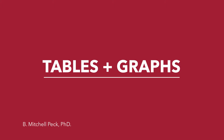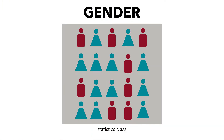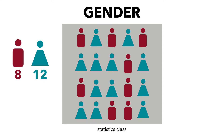In the previous tutorial, we learned how to calculate the frequency for the variable gender. This was the data set that we used. We already know that we had 8 males and 12 females, and our total number is 20.